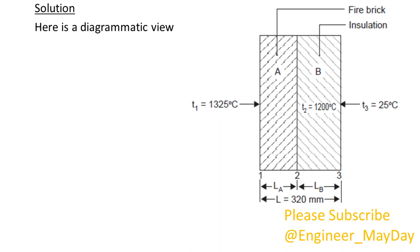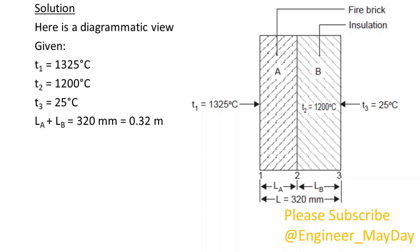Solution. Here is a diagrammatic view. Given: Temperature T1 equals 1,325 degrees Celsius. Temperature T2 equals 1,200 degrees Celsius. Temperature T3 equals 25 degrees Celsius. Thickness LA plus LB equals 0.32 meters. Thermal conductivity KA equals 0.84 watts per meter per degree Celsius. Thermal conductivity KB equals 0.16 watts per meter per degree Celsius.